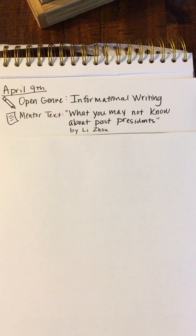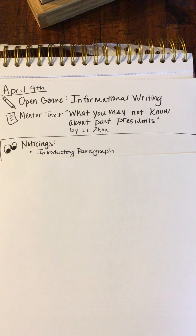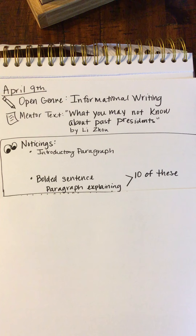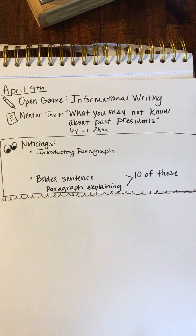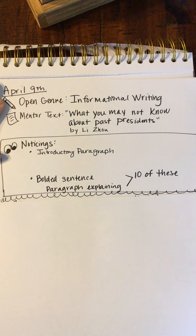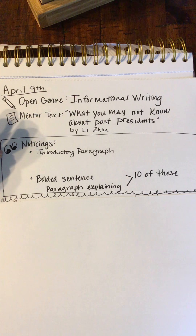To get started we need to first look at that mentor text. As you click it open, you may notice that there is an introductory paragraph, and also there is a bolded sentence followed by a paragraph explaining that sentence — and there are 10 of these. In our text today we're not going to be making 10 of them, but two or three seems about right.